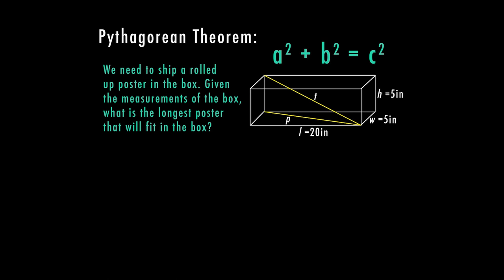Now we can also use the Pythagorean theorem to solve for different parts in 3D figures. So in this case, we have a box and we need to ship a rolled up poster in the box. So we're given the measurements of the box, and we want to find what is the longest poster that will fit in the box. So all it gives us is the exterior dimensions. The length is 20 inches, the width is 5, and the height is 5. So there's a couple of different steps we have to take here. And the first step is we need to find this length P. P is the length of the diagonal of the base of our box. T is actually the diagonal inside the box from the top corner to the bottom opposite corner. And that's going to be your longest distance inside the box. So we want to find what length of a rolled up poster would fit diagonally inside the box. So first we have to solve for P.